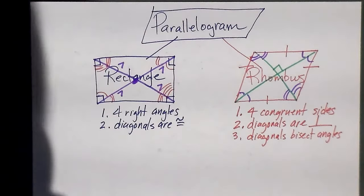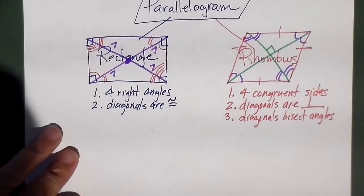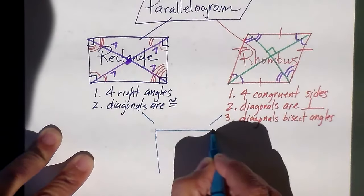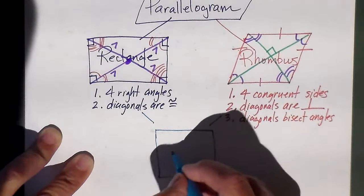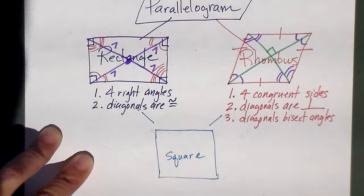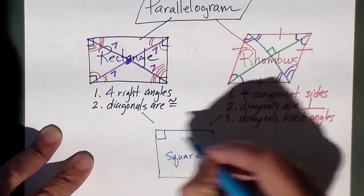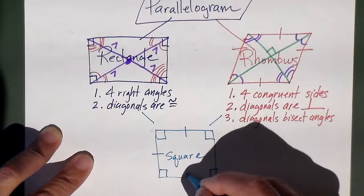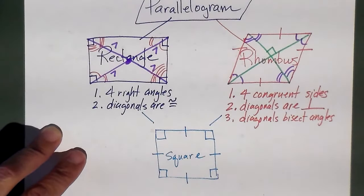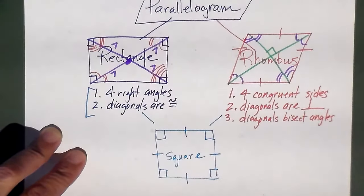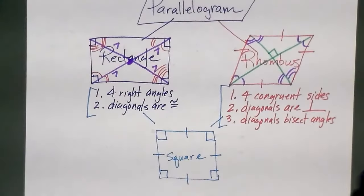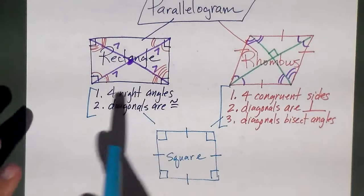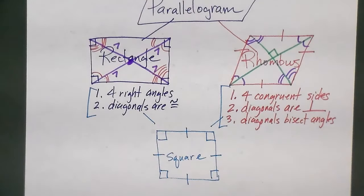Now let's look at the square, which is the baby of the rectangle and the rhombus. If the rectangle and the rhombus got together and had a baby, it would be a square. Because what does a square have? It has the four right angles from the rectangle and the four congruent sides from the rhombus. Which also means it has all of the rectangle's properties and all of the rhombus's properties. The square is the one that has all of the properties — all parallelogram properties, all rectangle properties, and all rhombus properties.